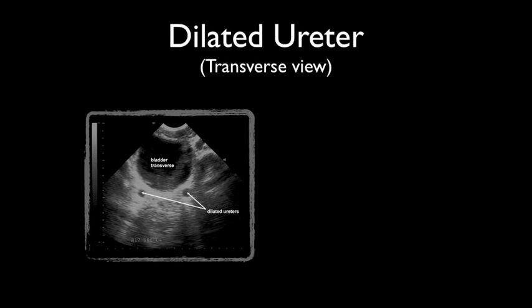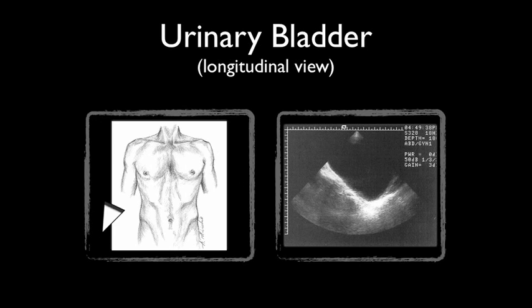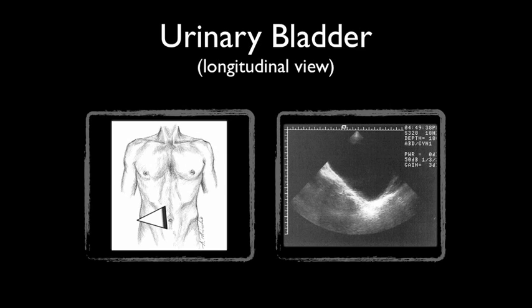Here's an example of dilated urinary ureters seen below the urinary bladder in the transverse view. For the most part, ureters are difficult to find because their view is usually obstructed by bowel. This is the longitudinal, or sagittal, view of the urinary bladder — it appears triangular in shape. Make sure the indicator marker on the probe is toward the patient's head. Confirming the position of the Foley catheter is easy. In the longitudinal and transverse view, one can appreciate the Foley catheter and its balloon apparatus within the bladder.